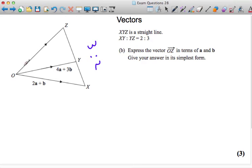So we want the vector from O to Z, and there's two ways I could find it. I could say it's OY plus YZ, or I could say it's OX plus XZ. I'll say that OZ is equal to OY plus YZ.